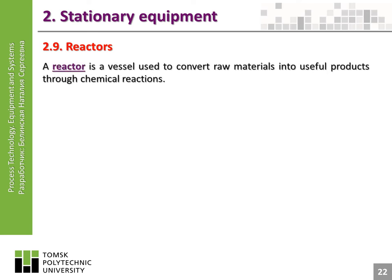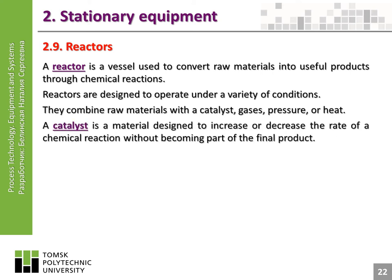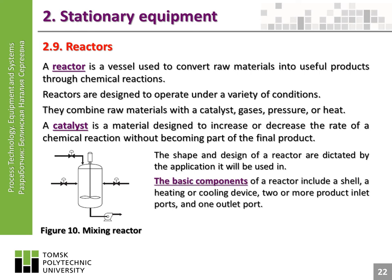A reactor is a vessel used to convert raw materials into useful products through chemical reactions. Reactors are designed to operate under a variety of conditions, combining raw materials with a catalyst, gases, pressure, or heat. A catalyst is a material designed to increase or decrease the rate of a chemical reaction without becoming part of the final product. The basic components of a reactor include a shell, a heating or cooling device, two or more product inlet ports, one outlet port, and a mixer to blend materials together.